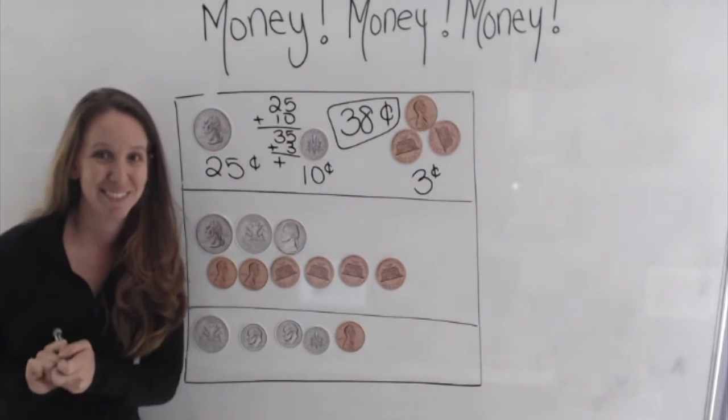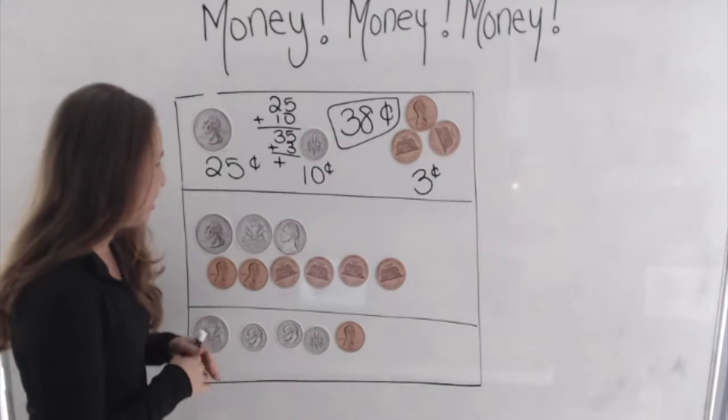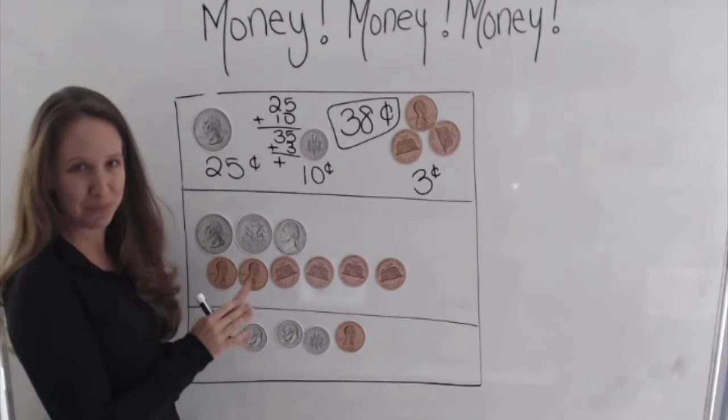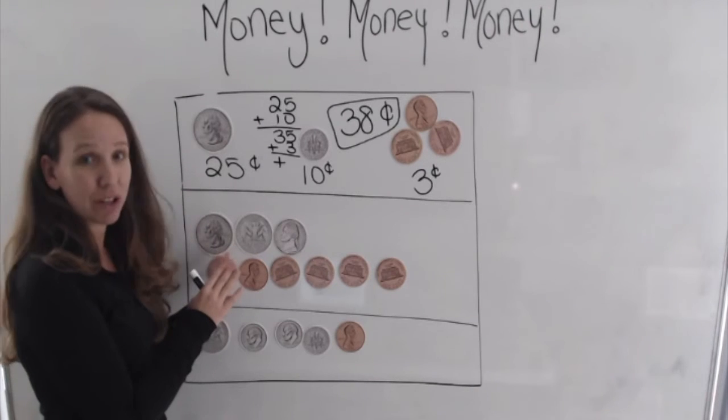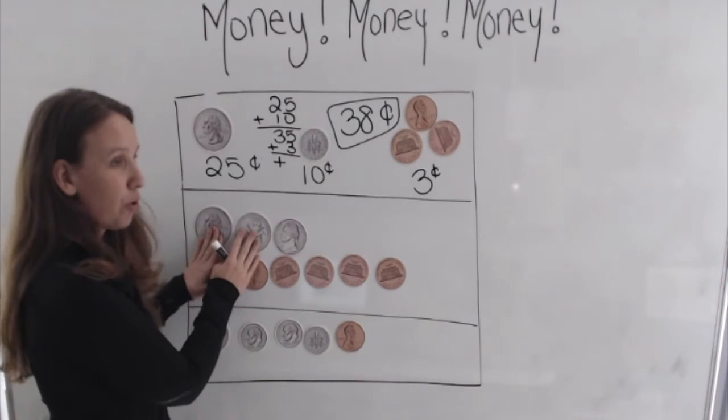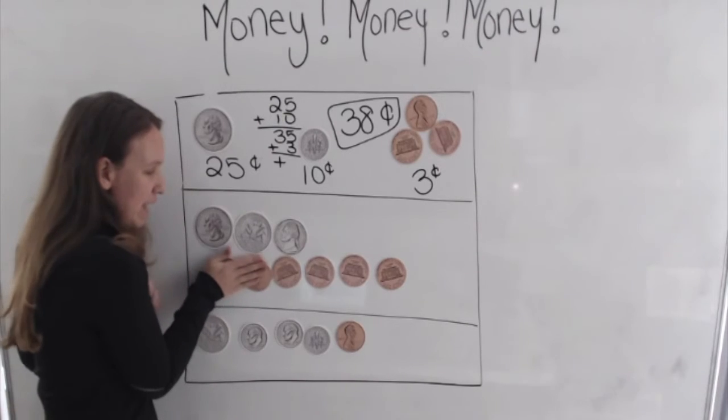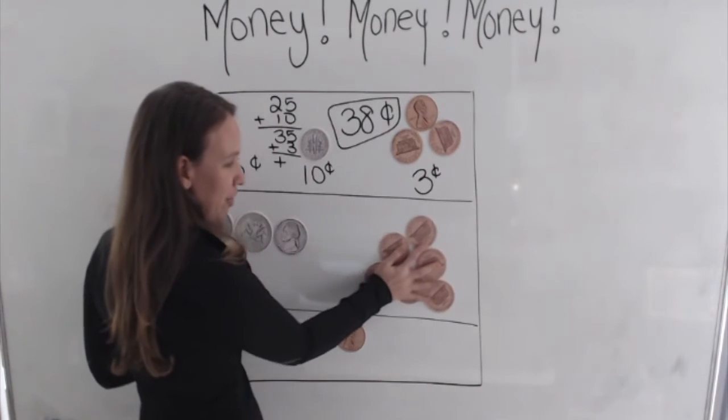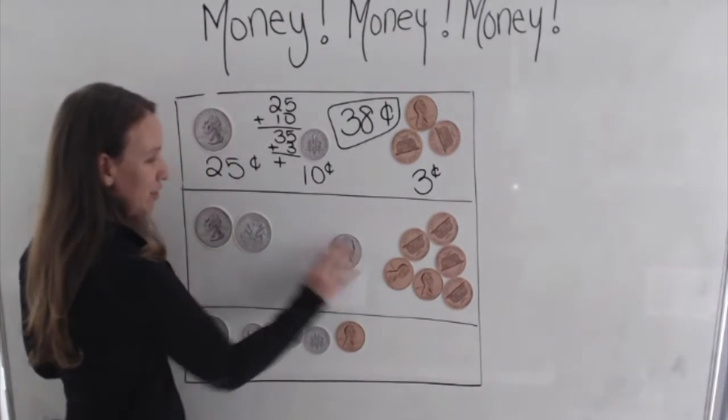How was that? Good. So now let's look at this one. This one's a little harder because we have two quarters. So we're going to take these two quarters and pull them off to the side. And I'm going to put all my pennies all together in this corner and the nickel in the middle.